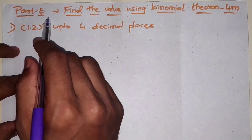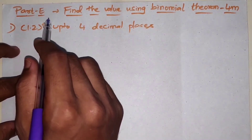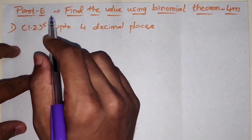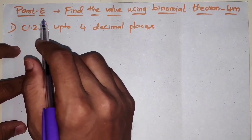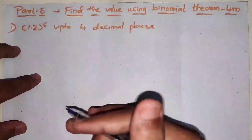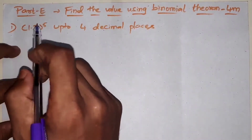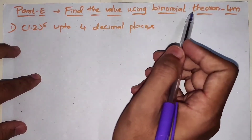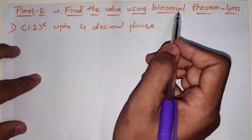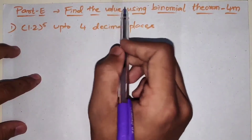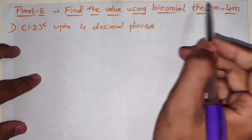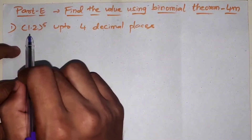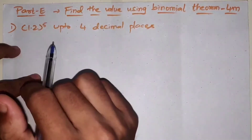Hello students, welcome back to the channel. This is the continuation video of basic math passing package. In the previous video, I started the first question and solved it. Now I will explain step by step. In this video, the sub-question is to find the value using the binomial theorem. We expand using the binomial theorem and find the value — a 4-marks question. This is one of the easiest questions.